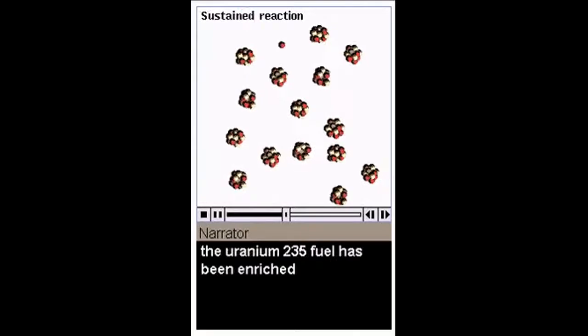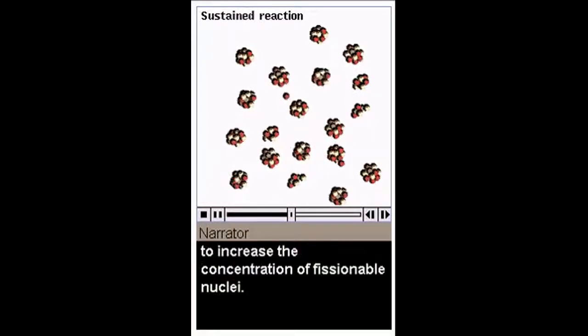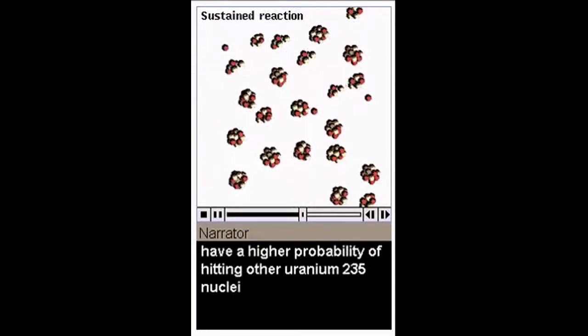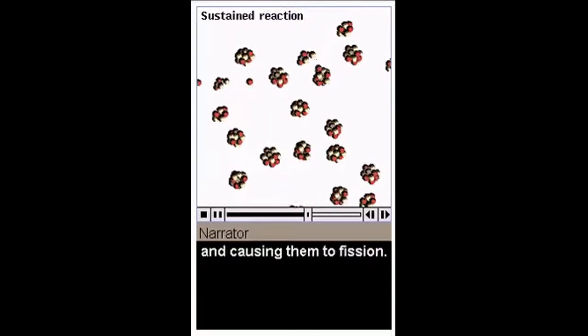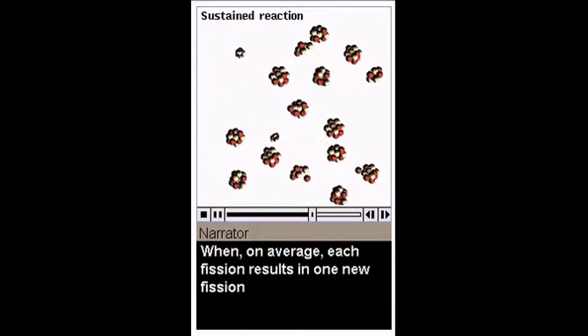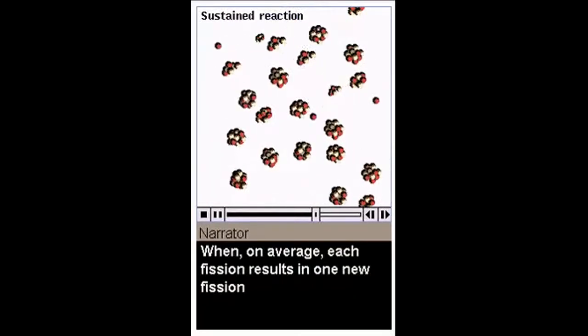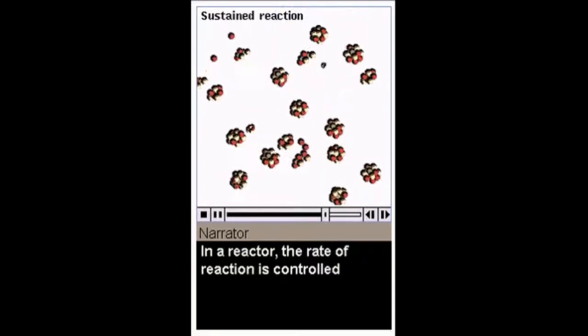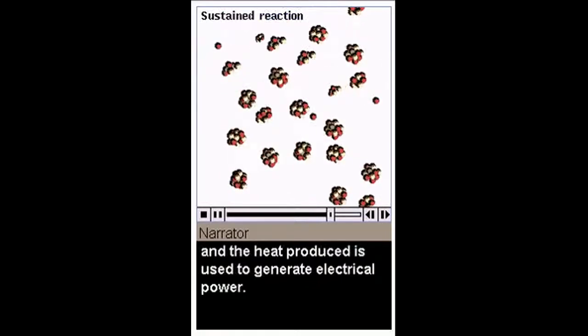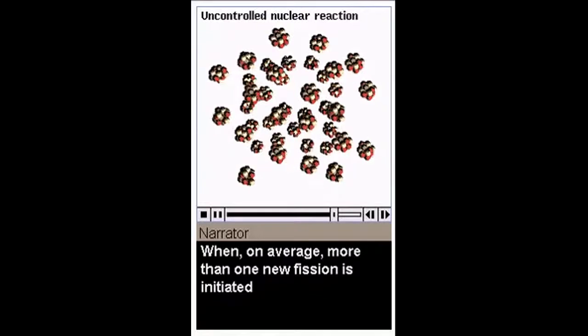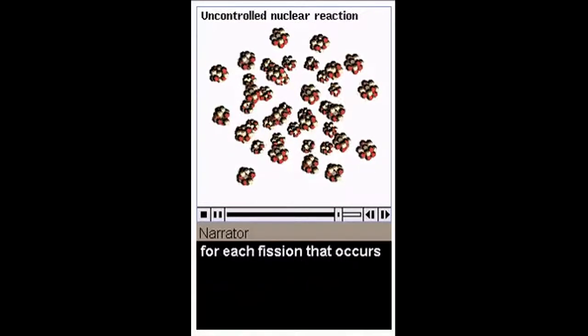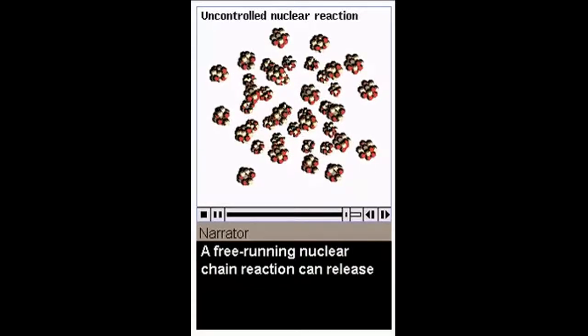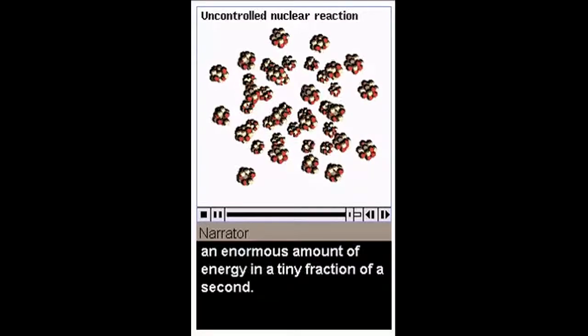In a nuclear reactor, the uranium-235 fuel has been enriched to increase the concentration of fissionable nuclei. Three neutrons released after the fission of one nucleus have a higher probability of hitting other uranium-235 nuclei and causing them to fission. When, on average, each fission results in one new fission, a sustained nuclear reaction occurs. In a reactor, the rate of reaction is controlled, and the heat produced is used to generate electrical power. When, on average, more than one new fission is initiated for each fission that occurs, then an uncontrolled chain reaction results. A free-running nuclear reaction can release an enormous amount of energy in a tiny fraction of a second.